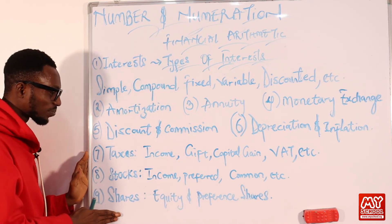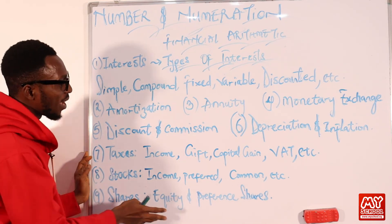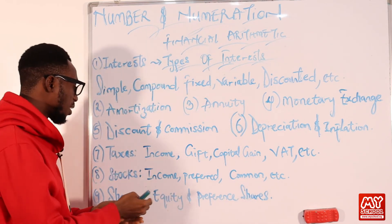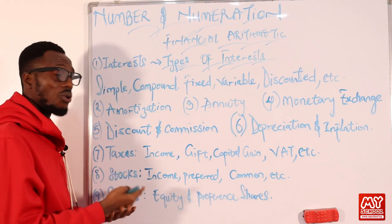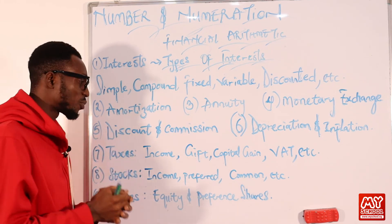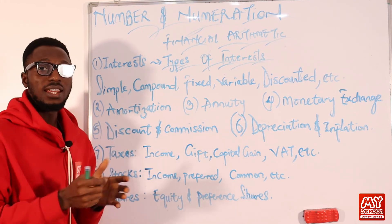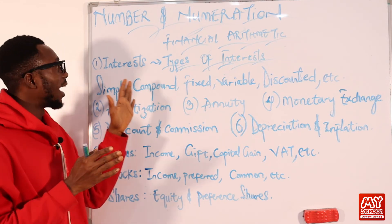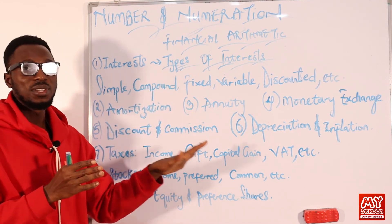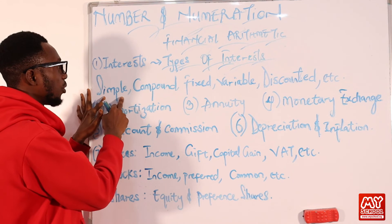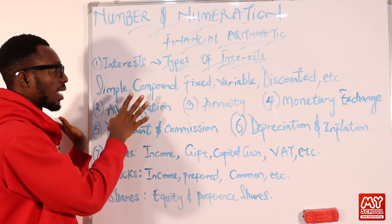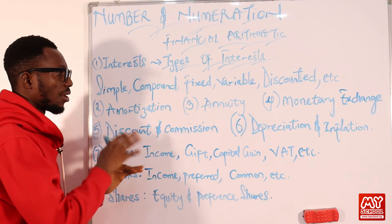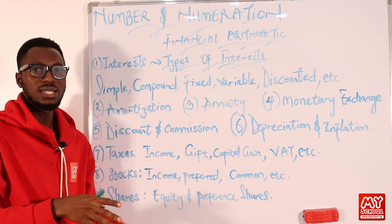We now go to shares. We have equity and preference shares. Shares are just a portion of the stocks — units of ownership. In the full video section, you are going to get several examples on these concepts, including the formulas for simple interest, compound interest, amortization, annuity, monetary exchange, and discounts — most of the concepts you are seeing here.